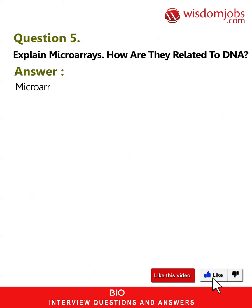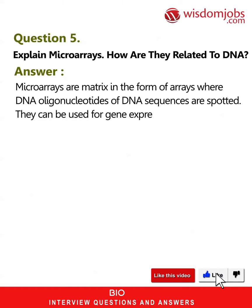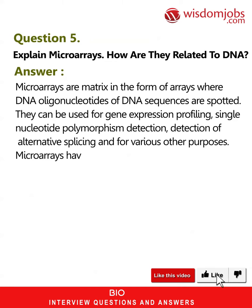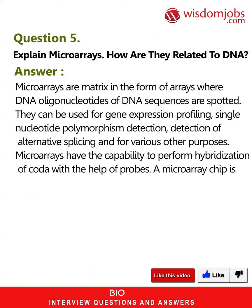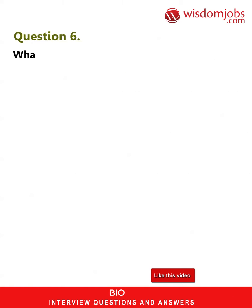Question 5: Explain micro arrays. How are they related to DNA? Answer: Micro arrays are matrices in the form of arrays where oligonucleotides of DNA sequences are spotted. They can be used for gene expression profiling, single nucleotide polymorphism detection, detection of alternative splicing, and for various other purposes. Micro arrays have the capability to perform hybridization with the help of probes. A micro array chip is capable of performing a large set of genetic related experiments concurrently.